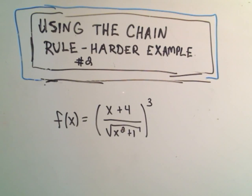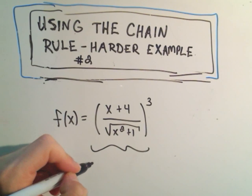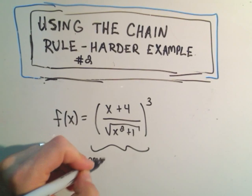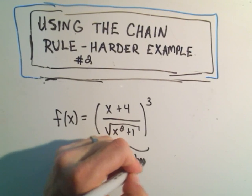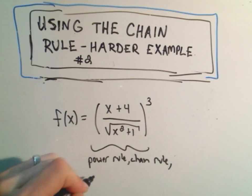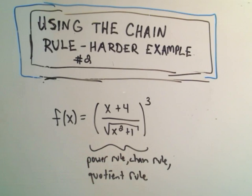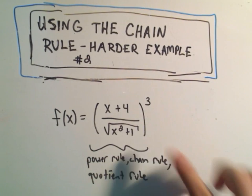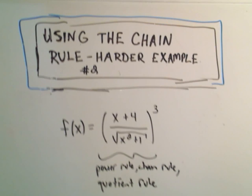Okay, in this video, I want to do another chain rule example. And in this one we're gonna have to use both the power rule along with the chain rule and then also the quotient rule because we've got a fraction in there. So again, almost any time I see something raised to a power other than one it just automatically makes me think chain rule.